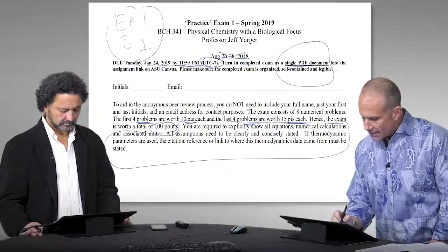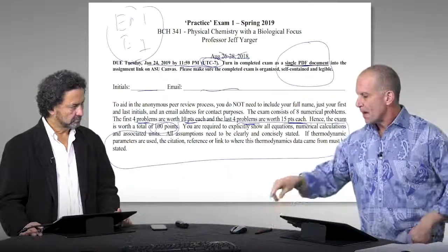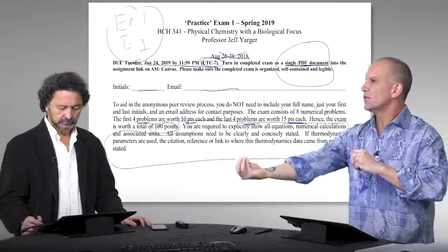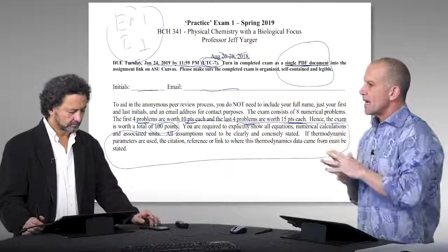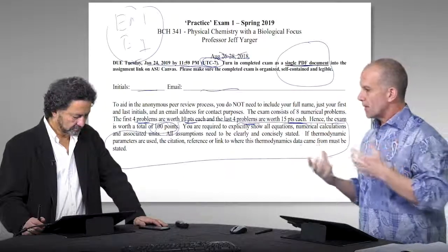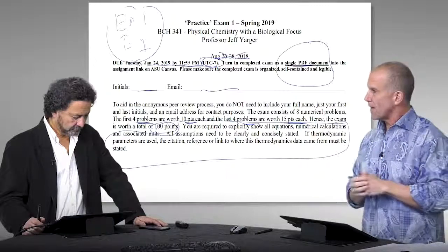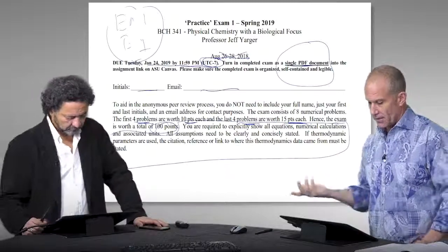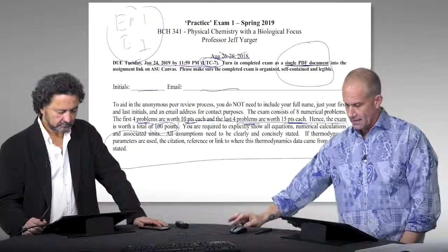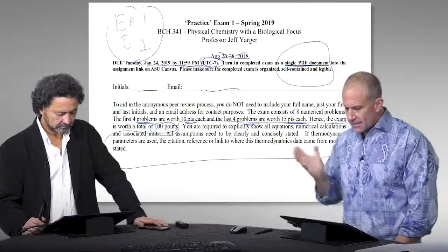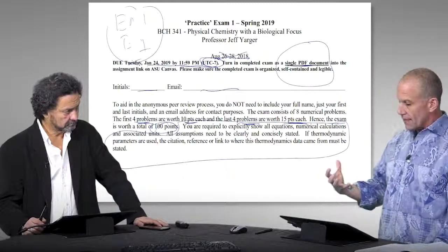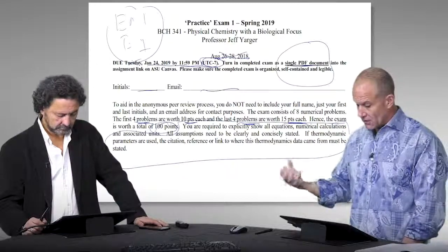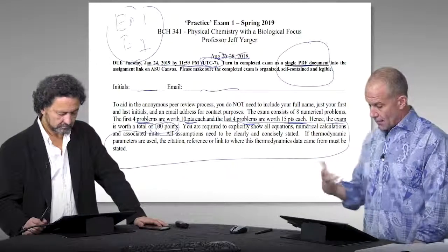The reason I've only asked them for their initials and email here is because one of the things we're testing out is the idea of peer grading, that they'll submit this to a peer grading. It'll be three anonymous peers will evaluate and grade this based on the rubric we provide. So for anonymity reasons, they just put their initials in a contact email address. So this is really the front page. And then all of it will just be eight problems. The first four worth 10 points each, the last four worth 15 points each.